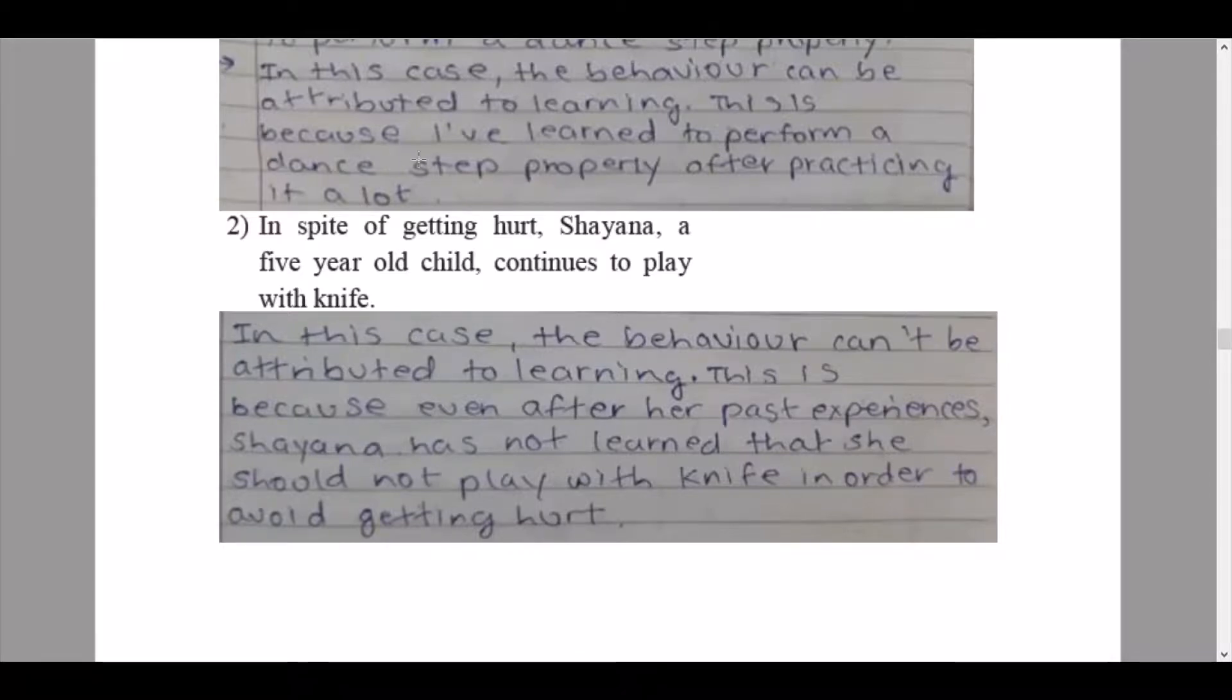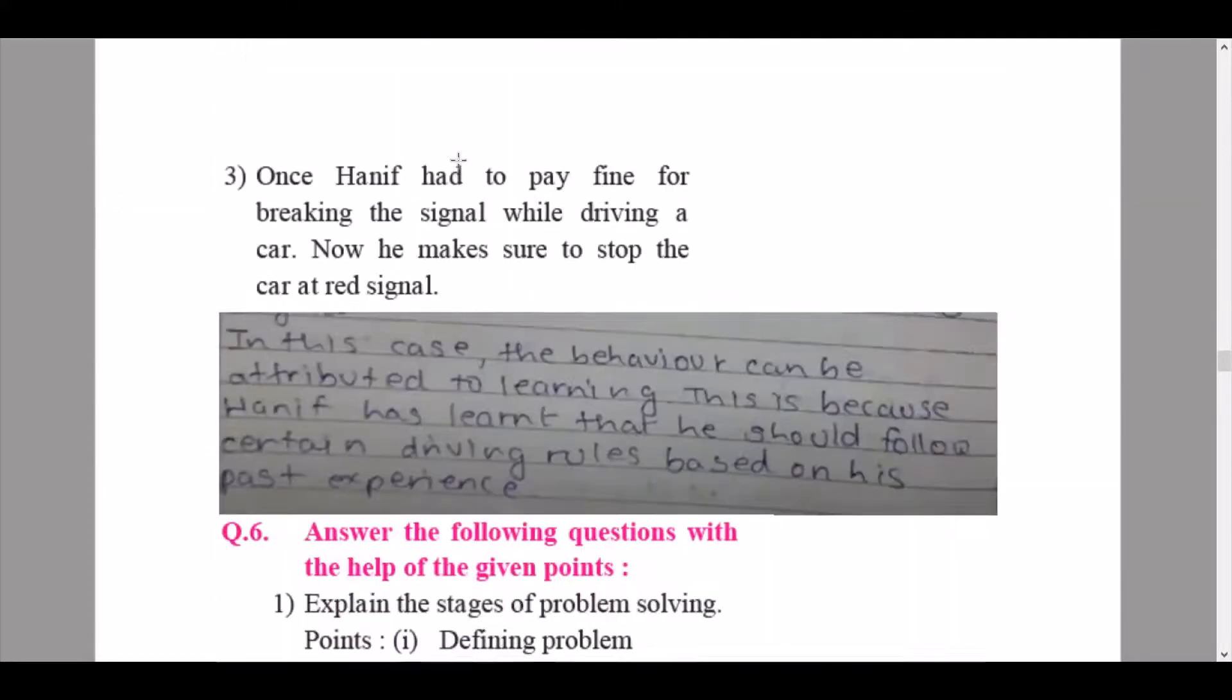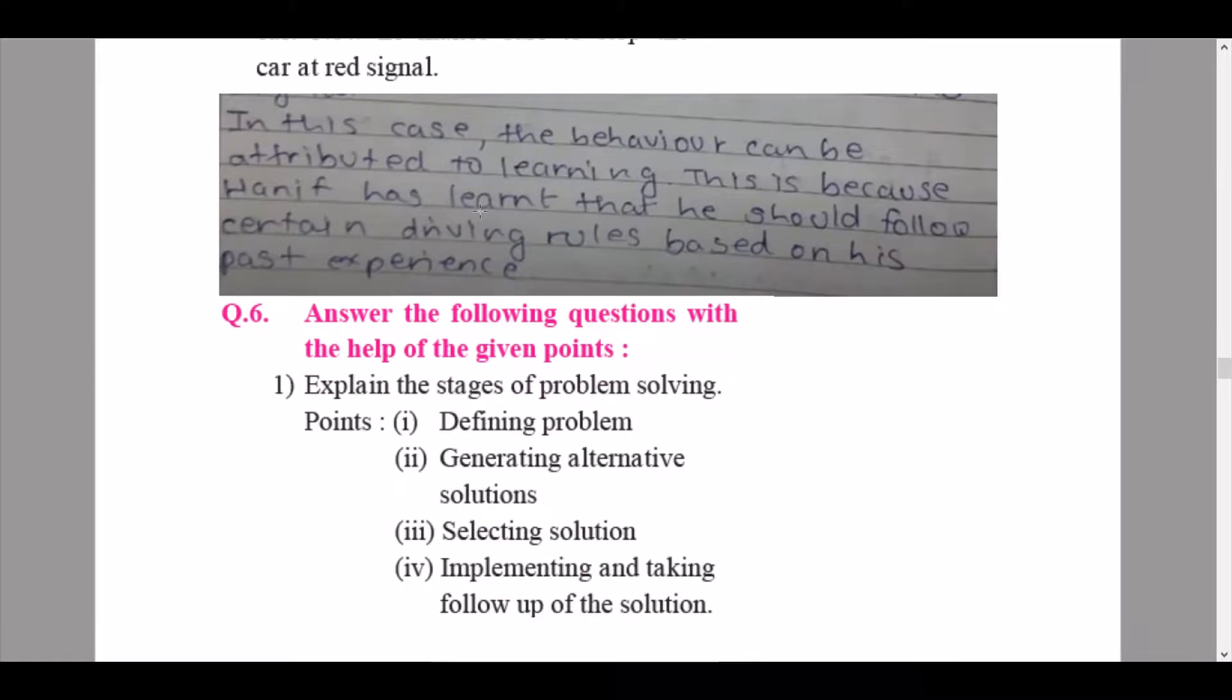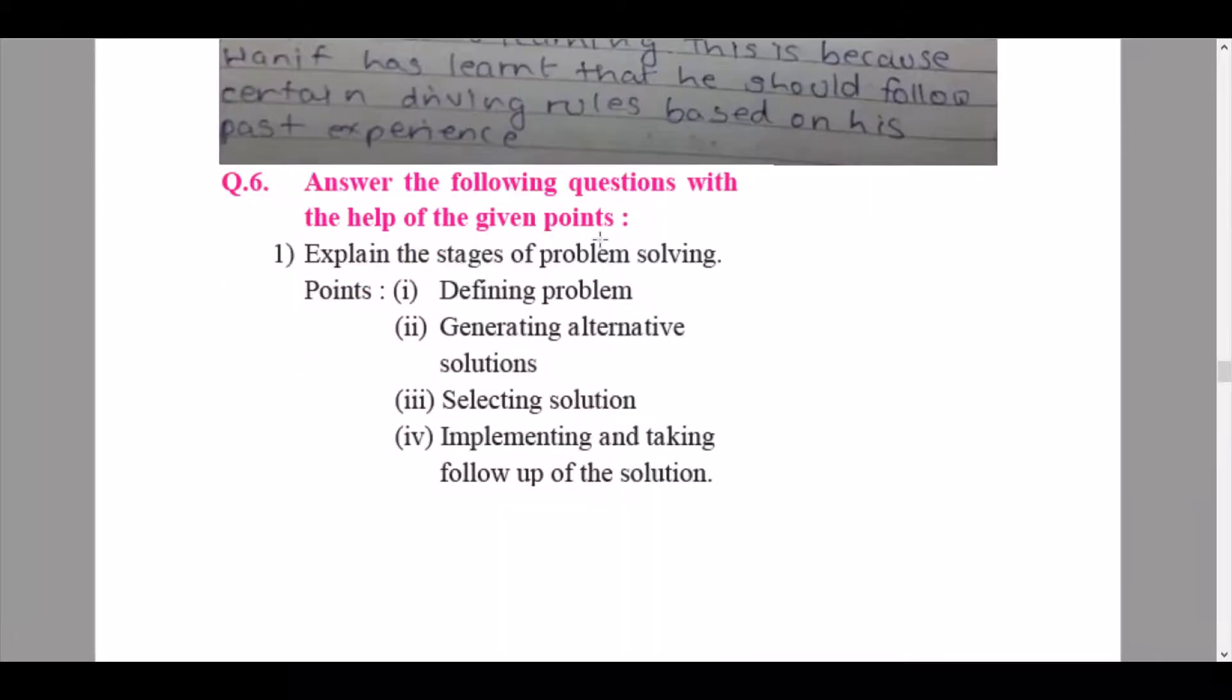Then we continue to our third behavior: once Hanif had to pay fine for breaking the signal while driving the car. Now he makes sure to stop at the car at every red signal. In this case the behavior can be attributed to learning. This is because Hanif has learned that he should follow certain driving rules based on his past experience.